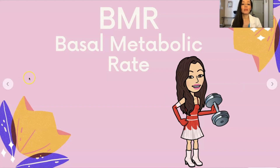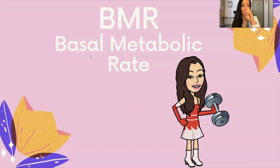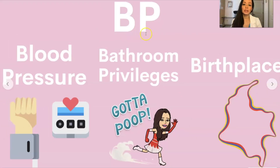If two people are sitting doing nothing all day and one person has more muscle while the other has more fat, the person with more muscle is burning more calories at rest — in a sense, they have a higher metabolism. BP could be blood pressure, bathroom privileges — for example, the patient has ad lib BP, meaning at liberty to use the bathroom whenever they want — or it could be birthplace.